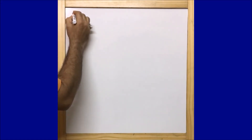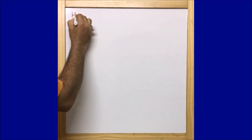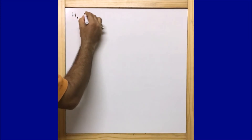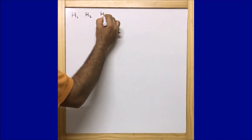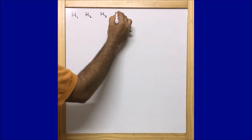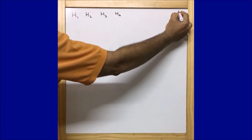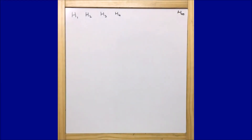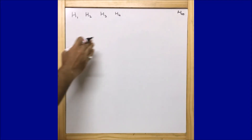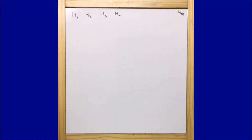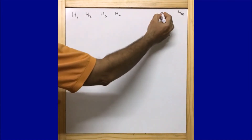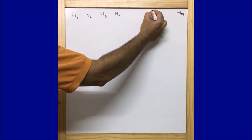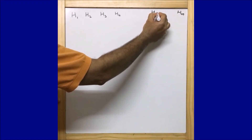Let me put down the things: house number 1, house number 2, house number 3, house number 4, and the last house is house number 49. As per the question, there is a house numbered x which falls in between these, and we need to find that number.